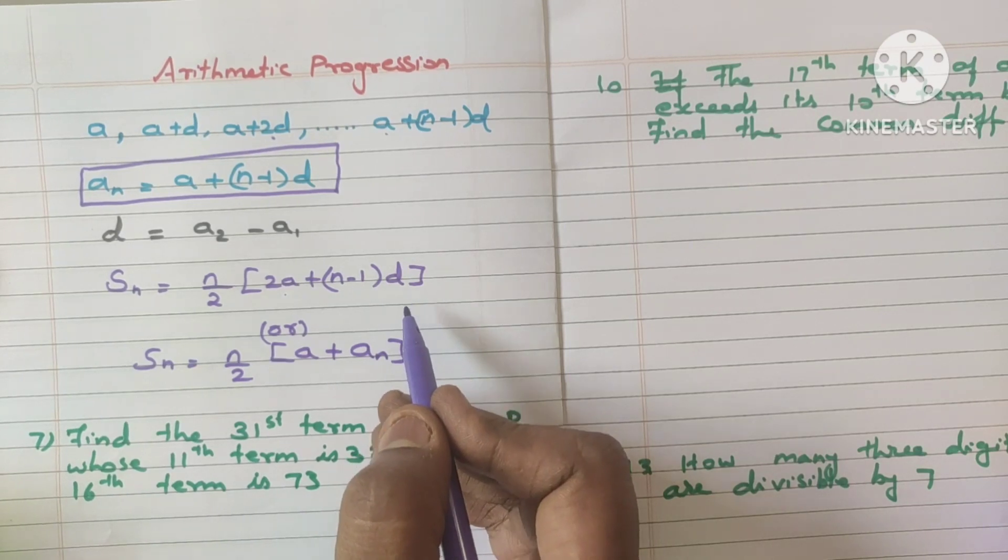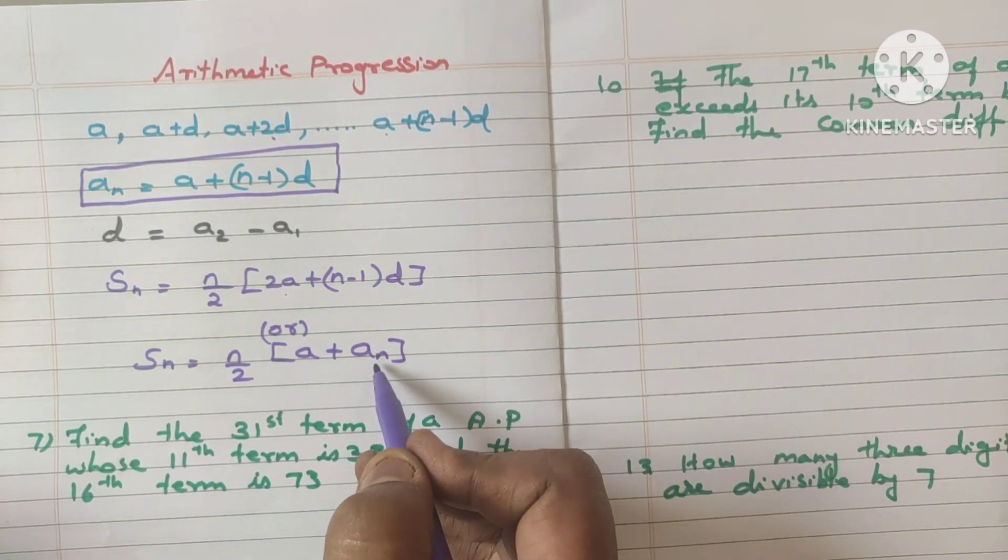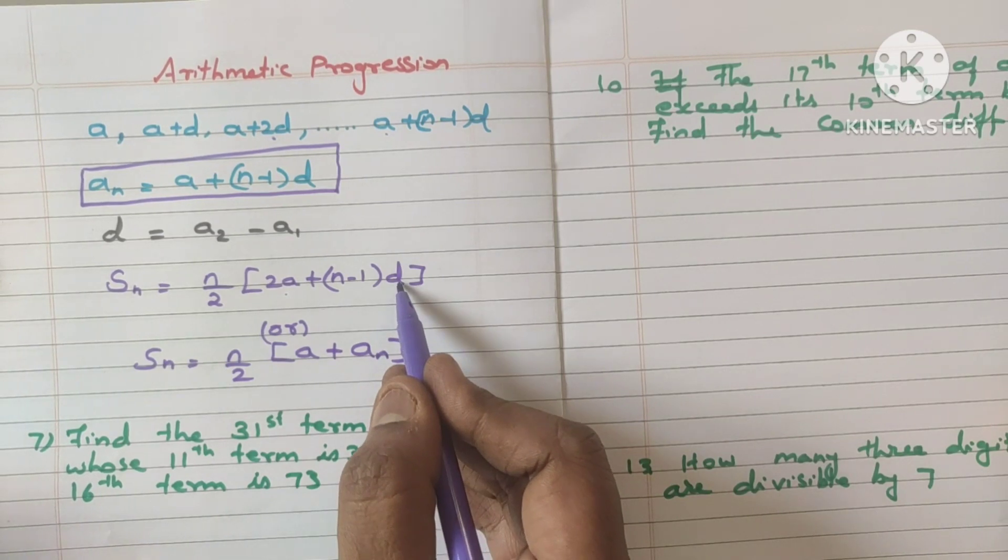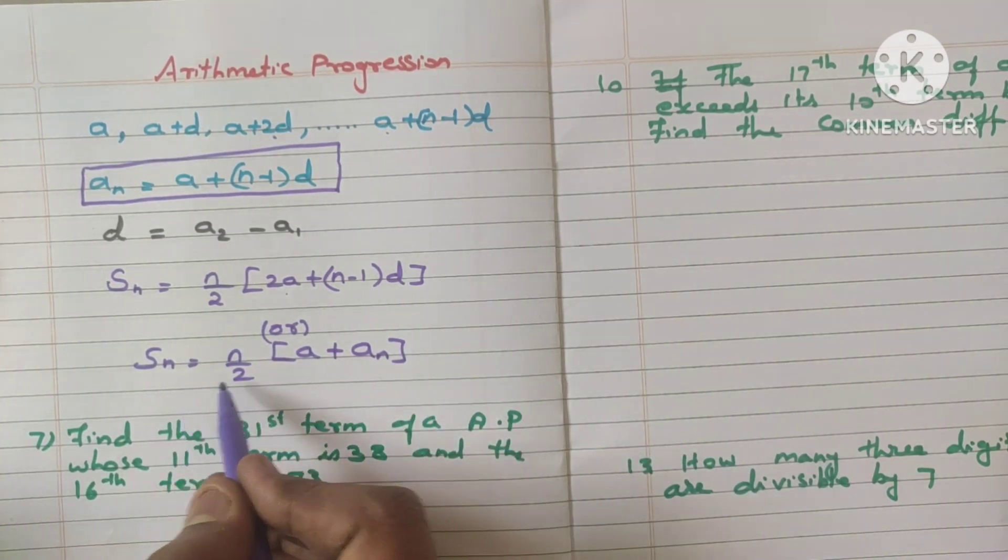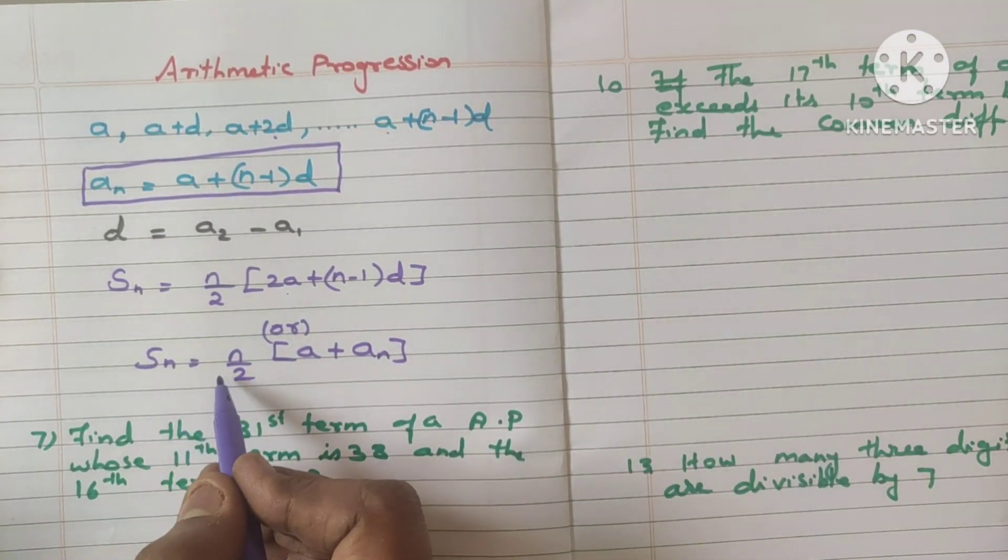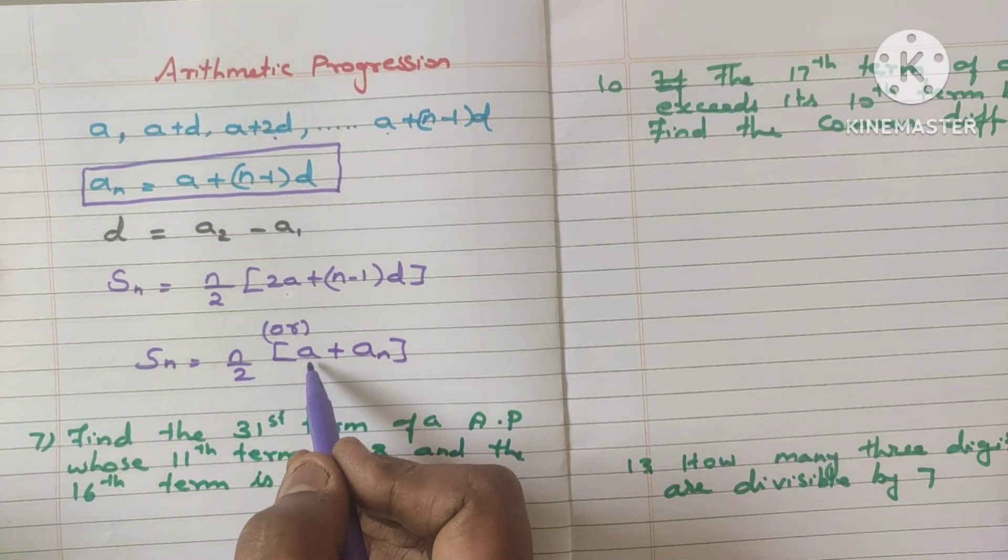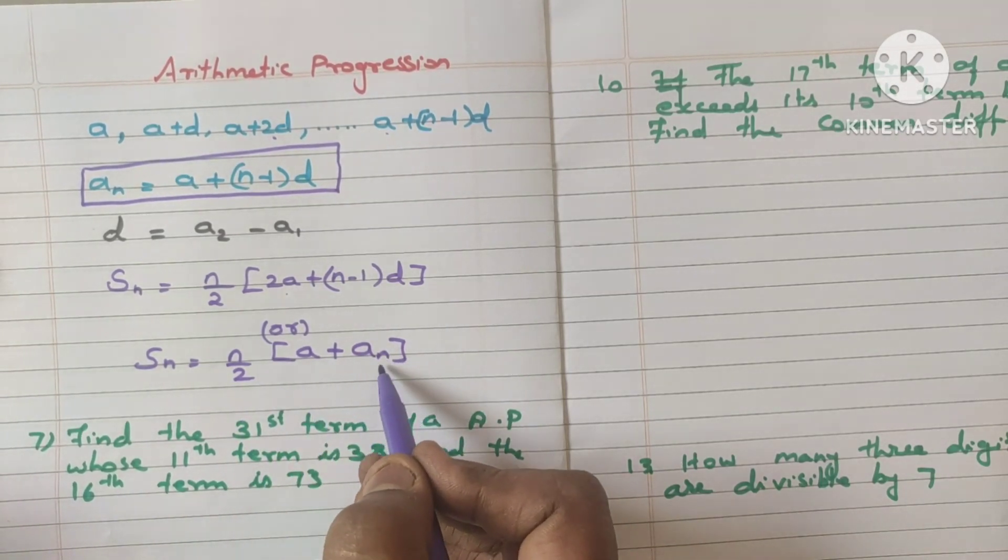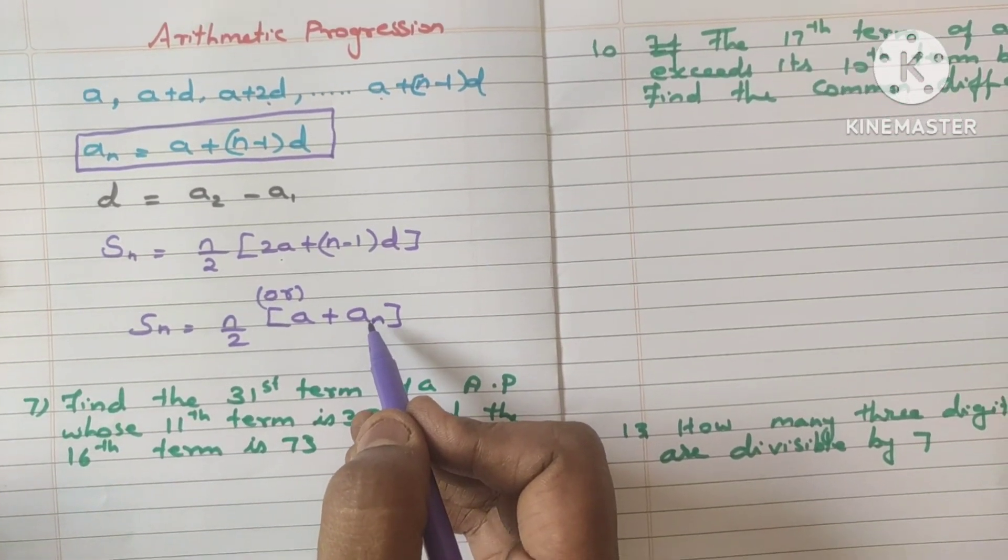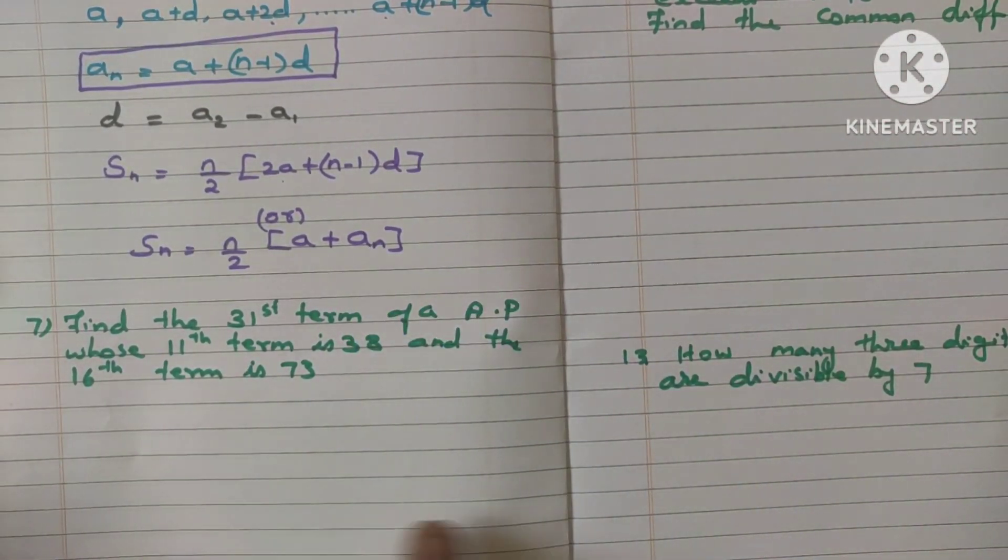In certain question, they will be giving the last term. They won't give that common difference. So such a case, we should use this formula: Sn is equal to n divided by 2 into a plus an, where an is the last term. Already I have uploaded. Please check it. Now let me discuss the question.